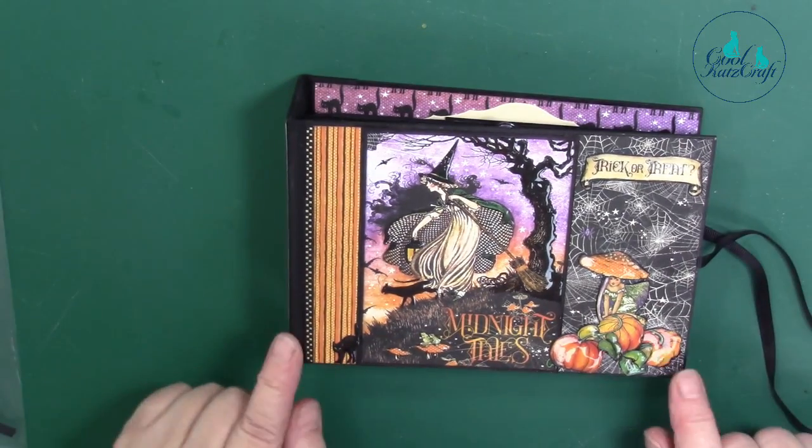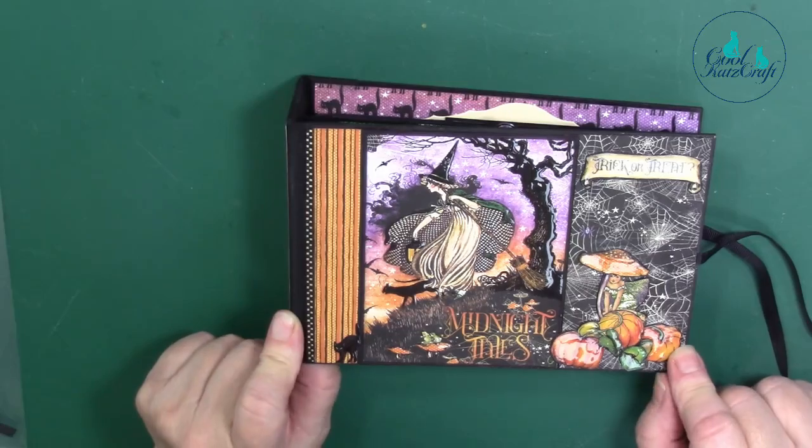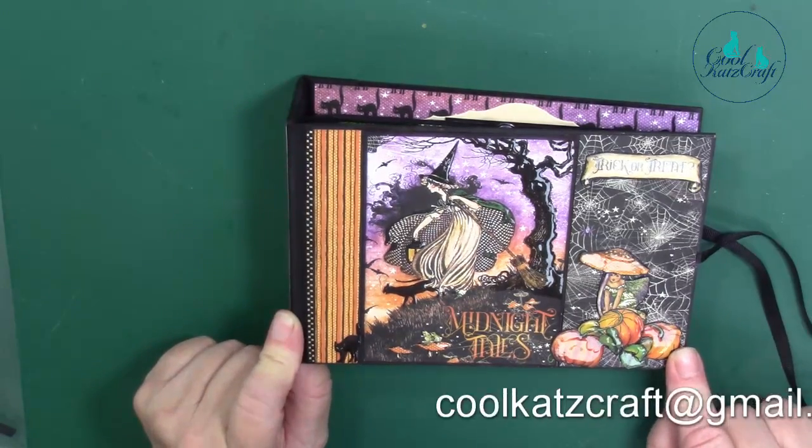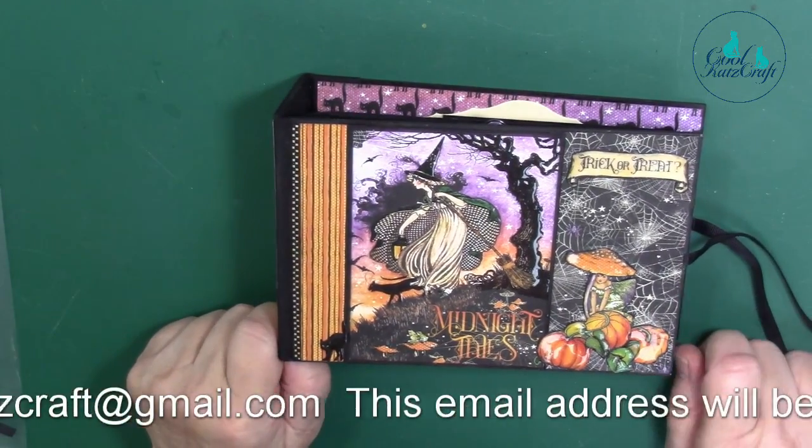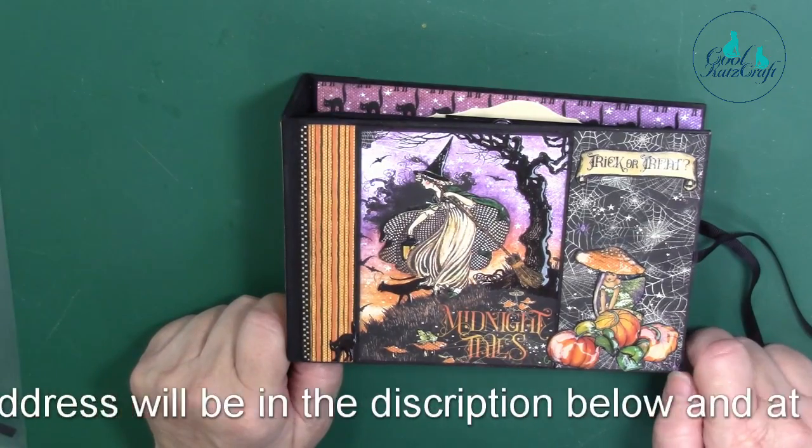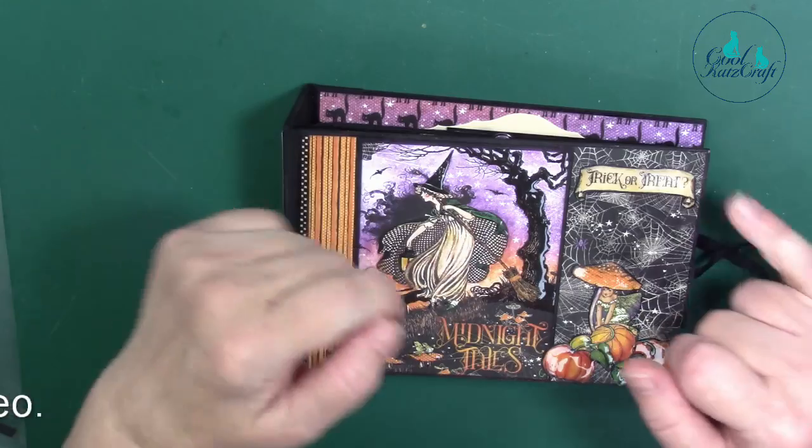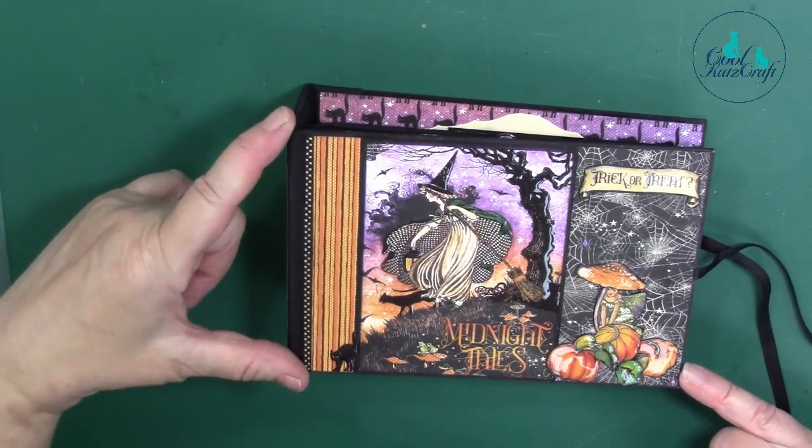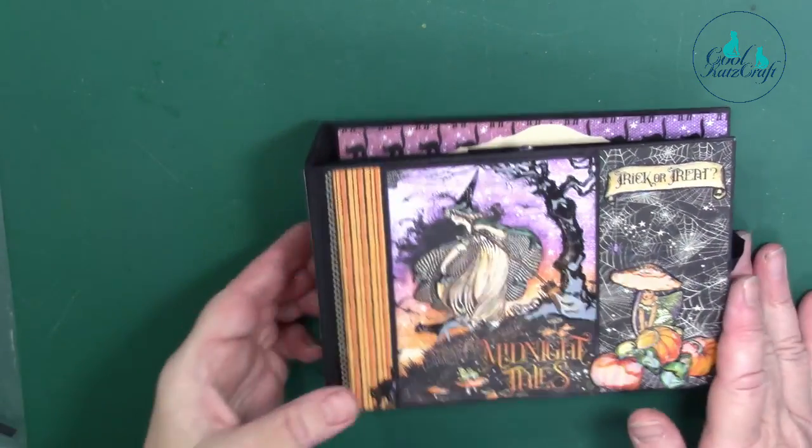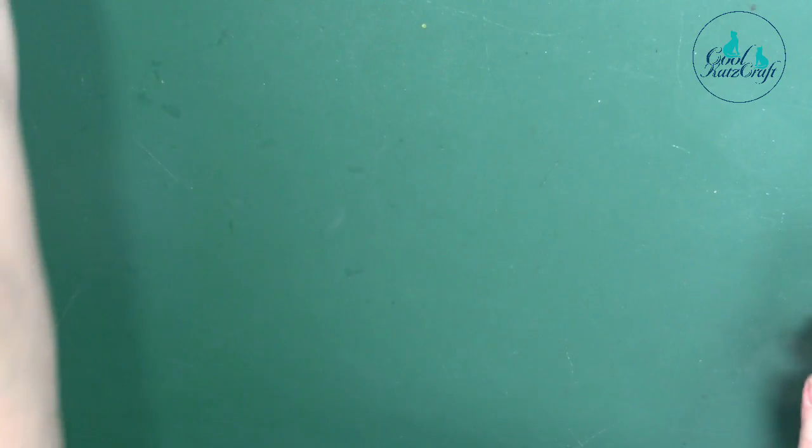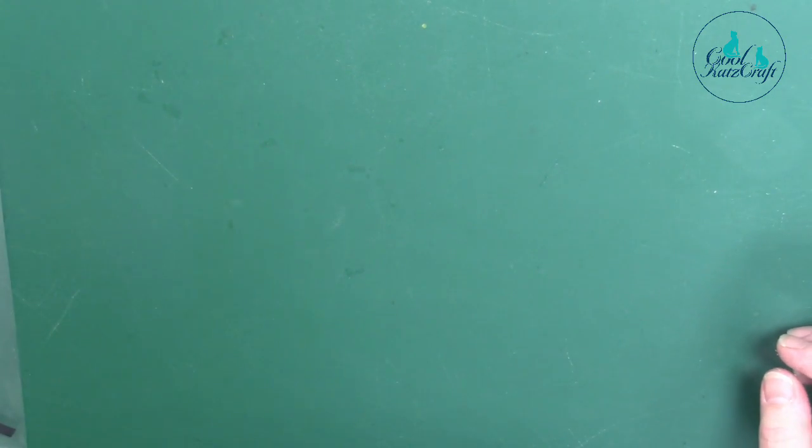Here's the front cover, and there is a free PDF cutting guide if you email us at coolcatscraft at gmail.com. The actual album cover size is five inches by seven inches, so we're going to start by making the album cover up.